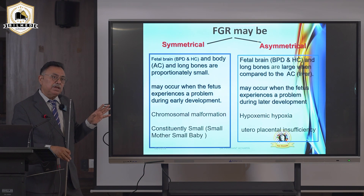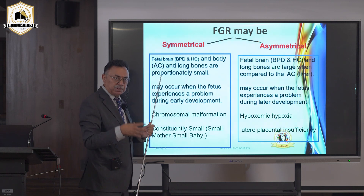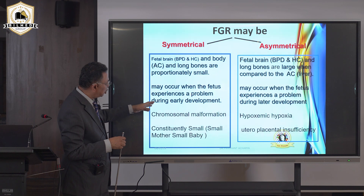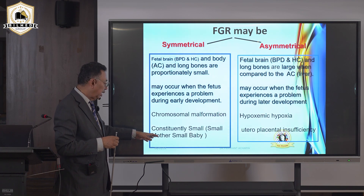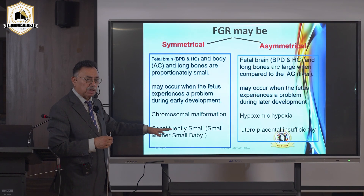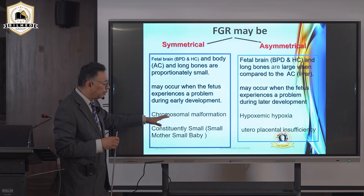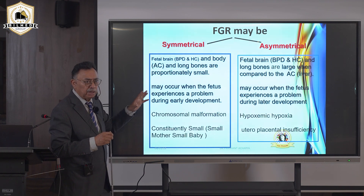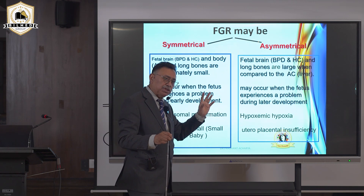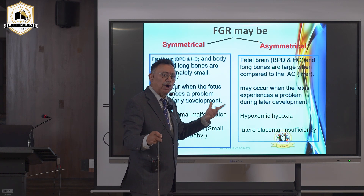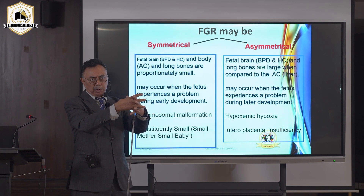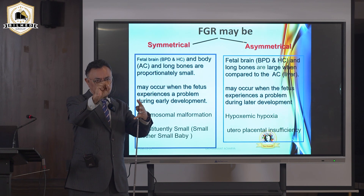Growth retardation can be symmetrical, occurring early, or asymmetrical, occurring later. Early growth restriction is usually due to chromosomal malformations or constitutionally small babies. Without color Doppler abnormalities, the baby is constitutionally small. With Doppler abnormalities, it is early fetal growth retardation due to chromosomal anomalies — Down syndrome, Edward syndrome, Patau syndrome, and anomalies on chromosomes 6, 19, and 17.